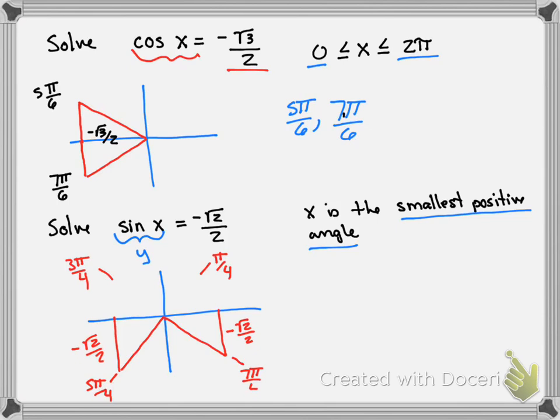So 5 pi over 4 and 7 pi over 4 are both correct, but only one of them is the smallest positive angle. So that would be our one correct answer.